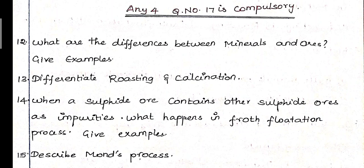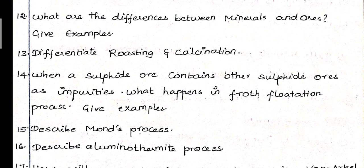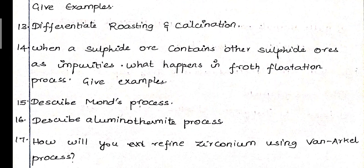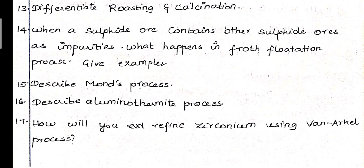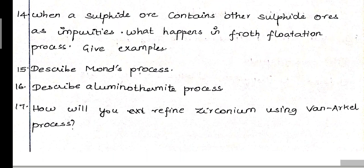13th question: Differentiate roasting and calcination. 14th question: When a sulfide ore contains other sulfide impurities, what happens in the froth flotation process? Give examples. 15th question: Define Mond's process. 16th question: Describe the aluminium thermite process. 17th question: How will you refine zirconium using the van Arkel process?